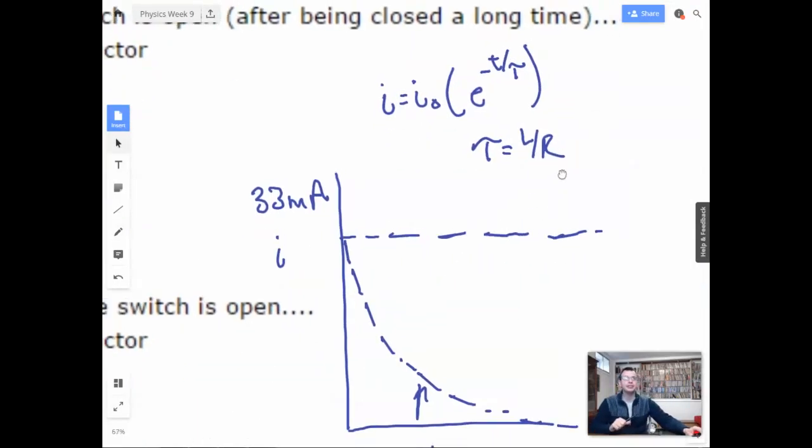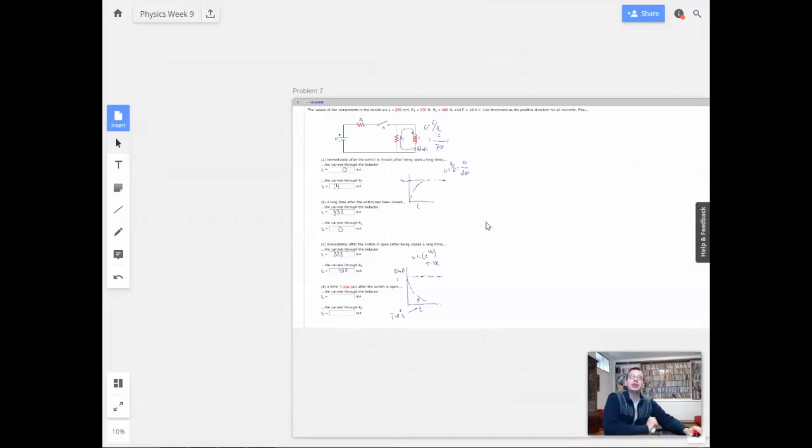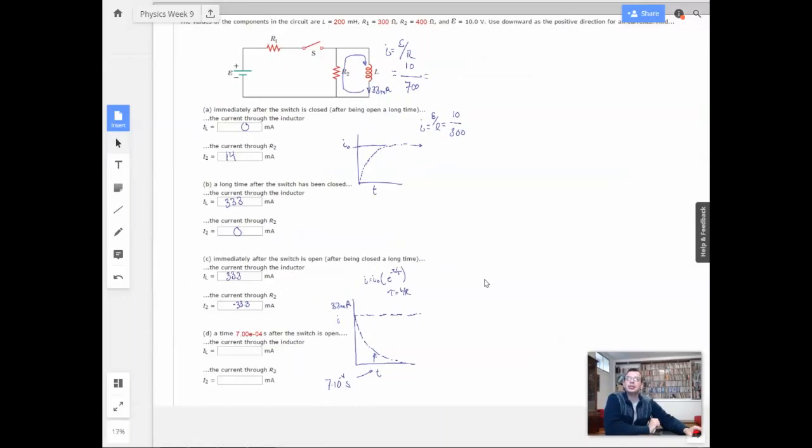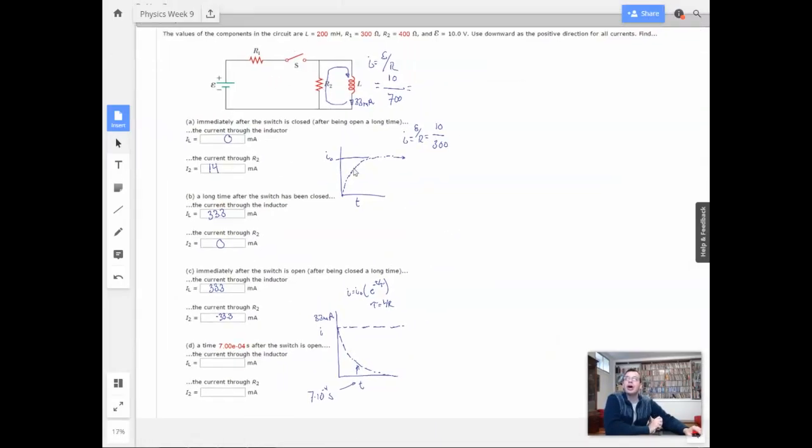So now we need to find out what that actually is. So we know that L is 200 millihenries, and we know that R, in this case we're just looking at this circuit right here, is R2. So I'm going to do, that's so convenient. So we have two times 10 to the negative third over, it's so big though, didn't mean to make that big, 400, four times 10 to the second.